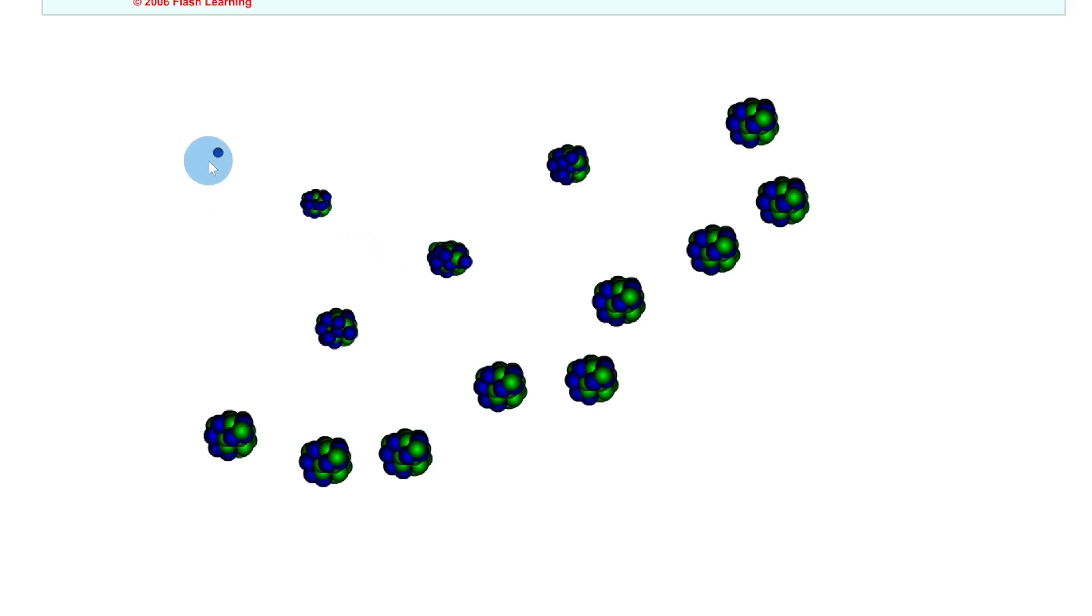So remember we have induced nuclear fission going on first, where the neutron is going to hit into this nucleus. But it's the neutrons that can go on and hit the other nuclei, causing more neutrons to be released and more energy.